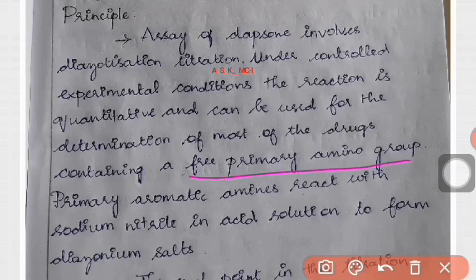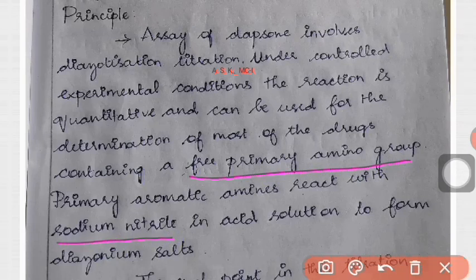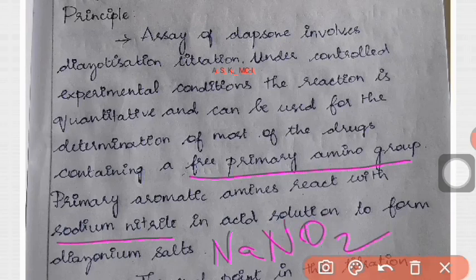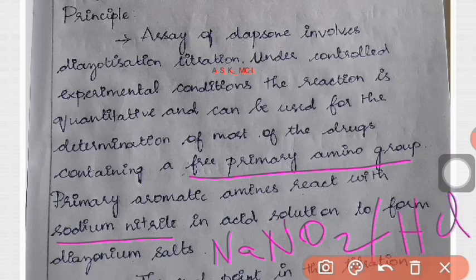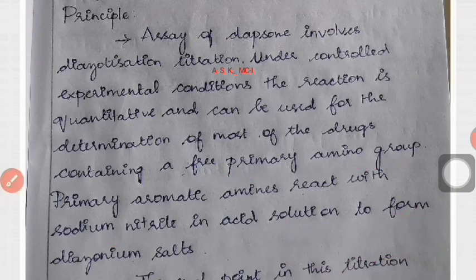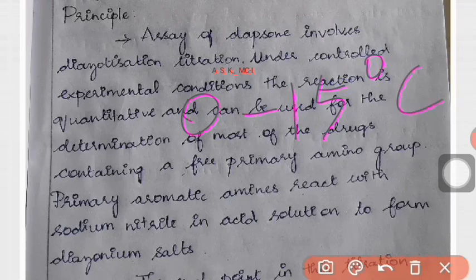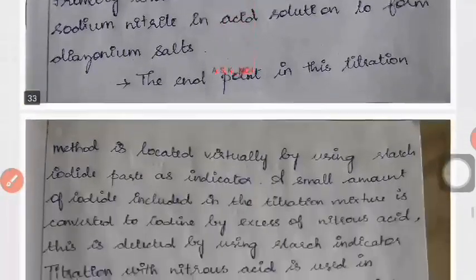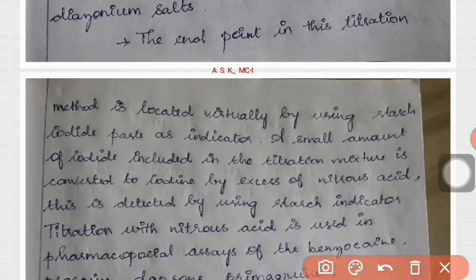The free primary amino group reacts with sodium nitrite NaNO2 and HCl. The important condition for this is 0 to 15 degree centigrade. The assay solution should be kept between 0 to 15 degree centigrade, and the end point is determined by using starch iodide paper.